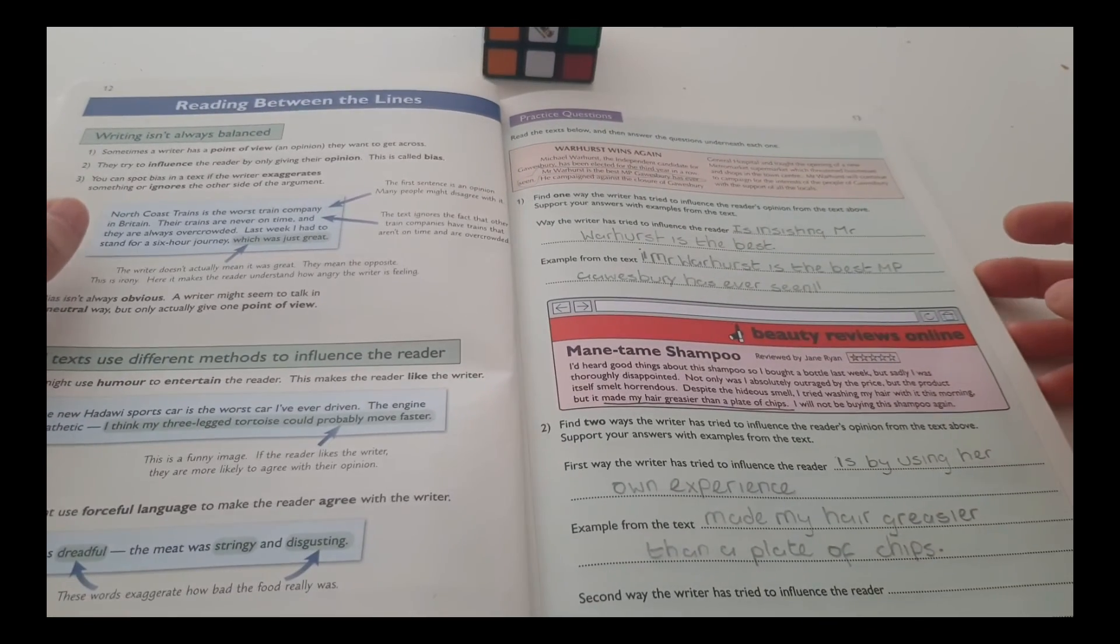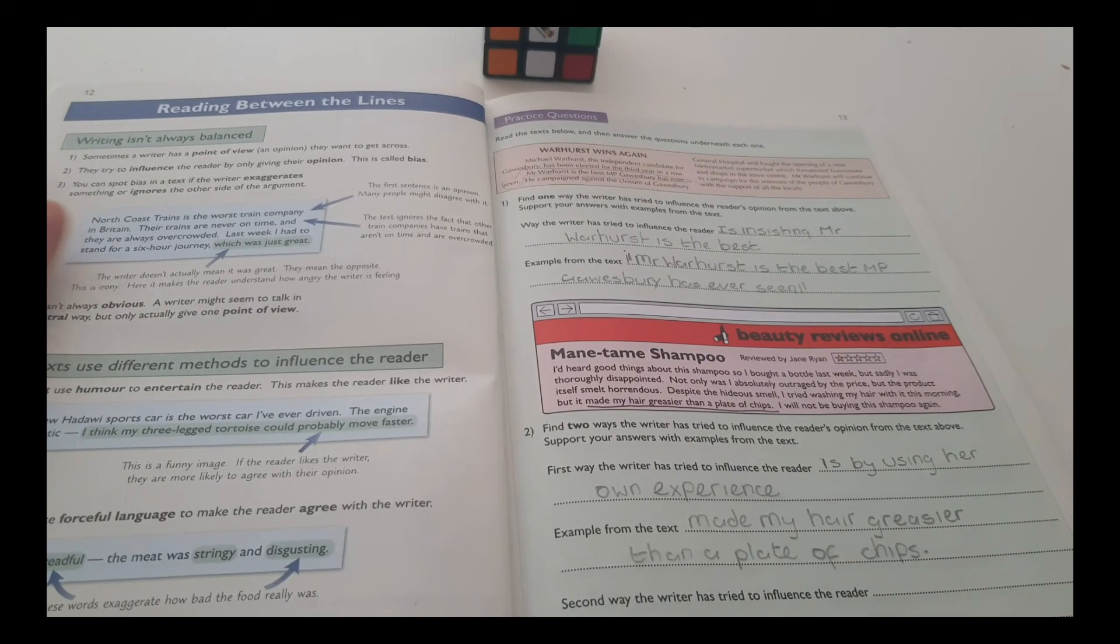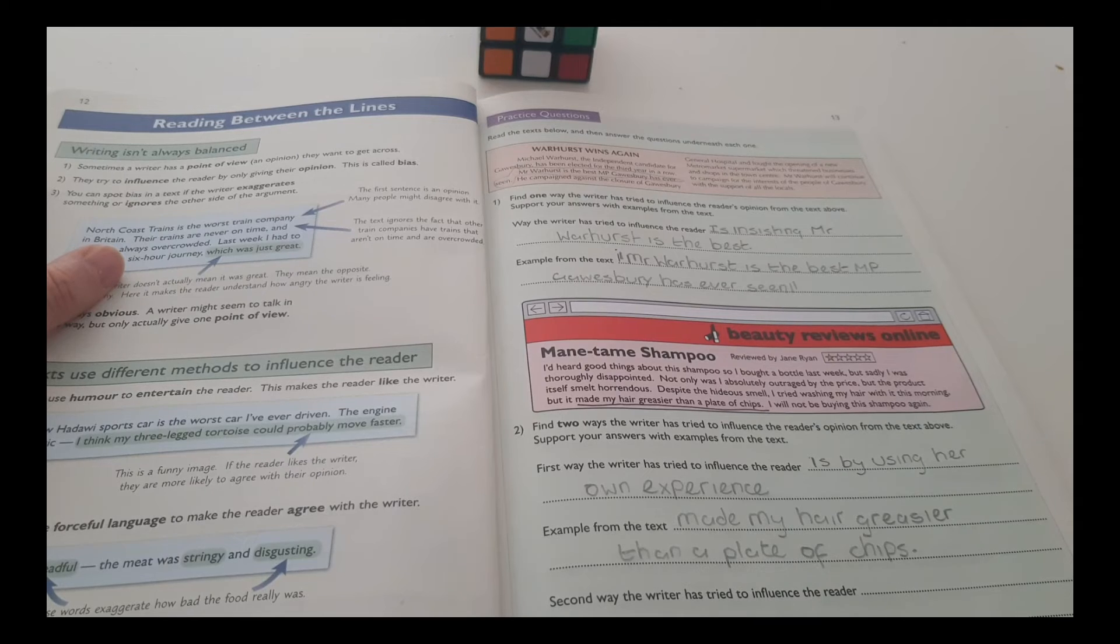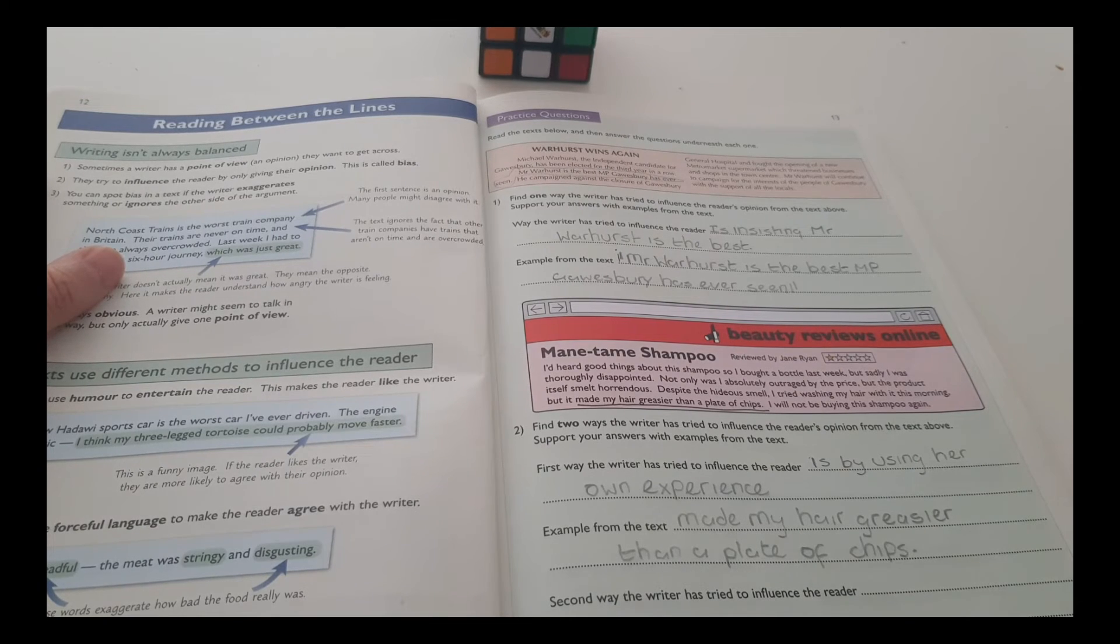Let's practice on the text. Read the text below and then answer the question underneath each one. Warhurst wins again. Michael Warhurst, the independent candidate for Gay-Westbury, has been elected for the third year in a row. Mr. Warhurst is the best MP Gay-Westbury has ever seen.